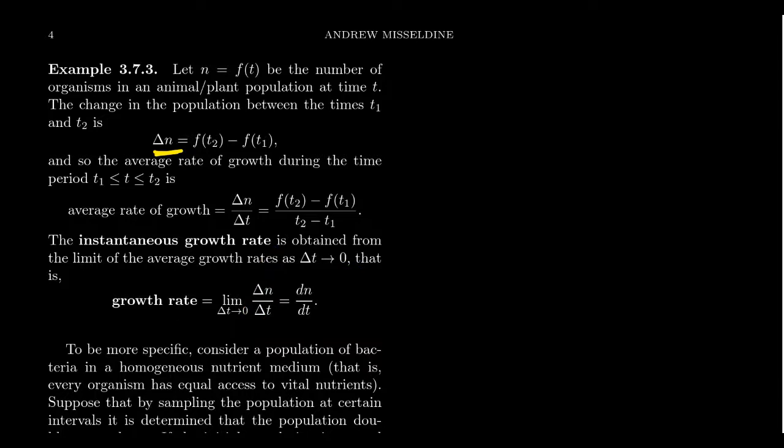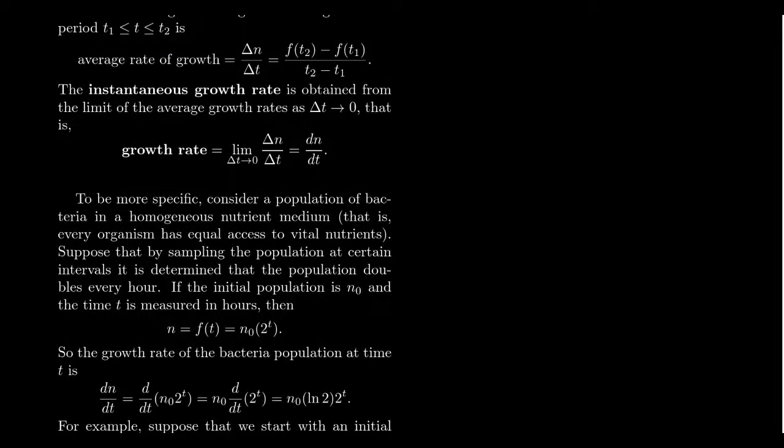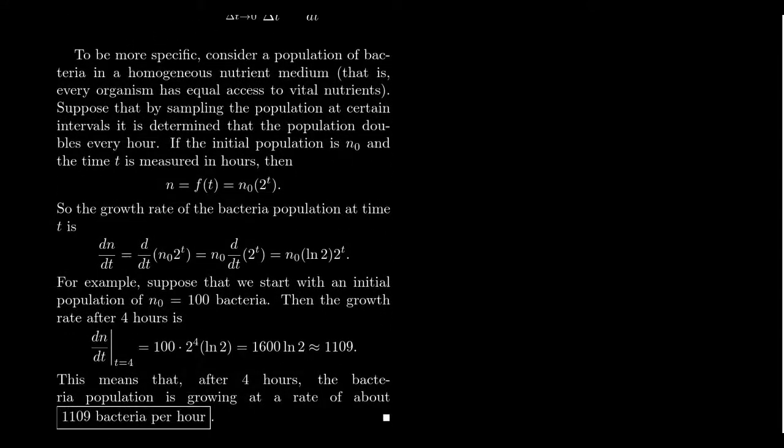This gives us the growth rate of the population at a specific instance of time. To be more specific, consider populations, let's say bacteria, which bacteria often grow so rapidly that we need to know at this instant what's going on. So let's imagine that a bacteria culture has a homogeneous nutrient medium. That is to say, every organism has equal access to vital nutrients, so all portions of the petri dish have equal opportunity to grow. Now, suppose by sampling, the population at certain intervals is determined that the population doubles every hour.